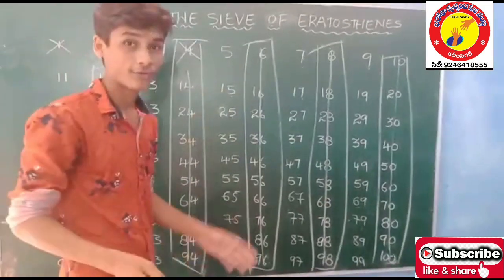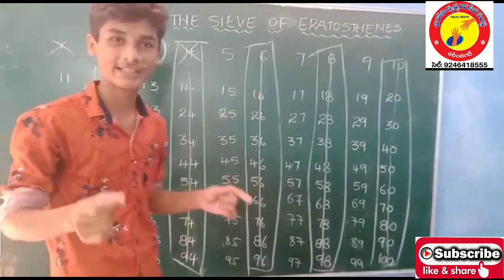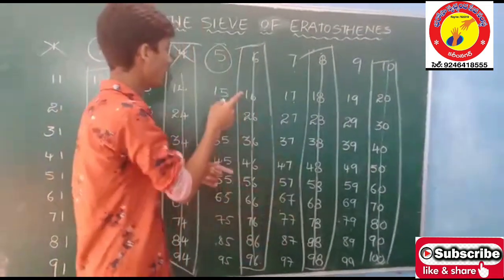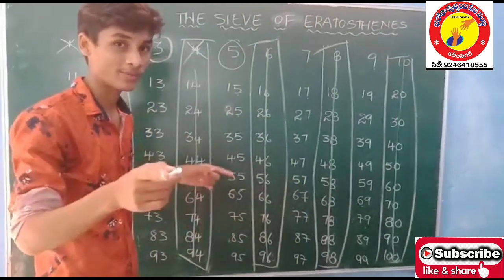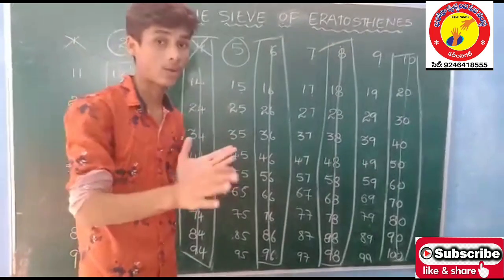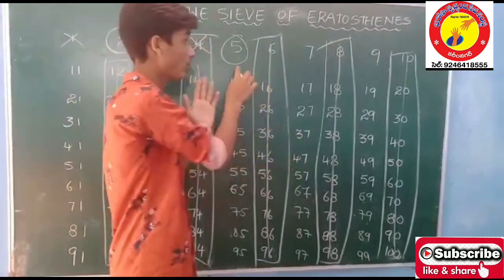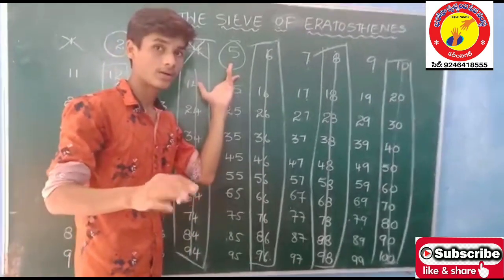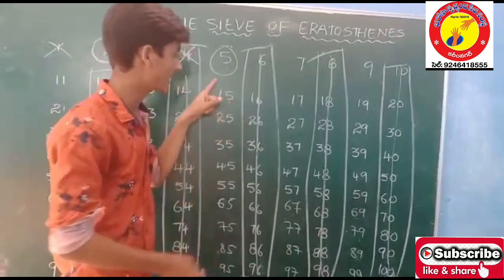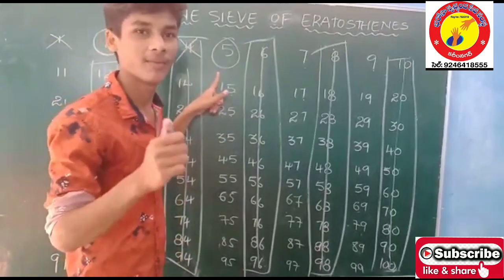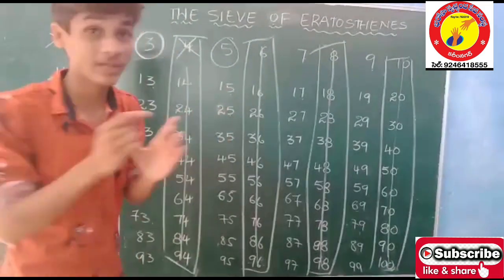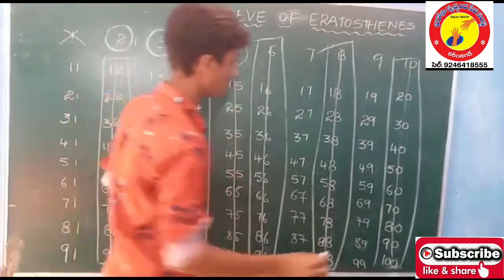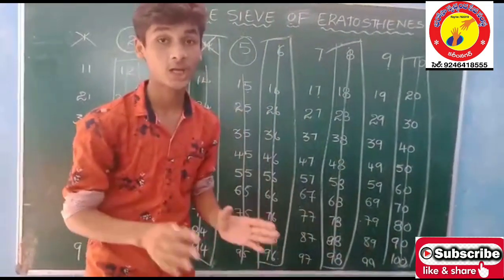Coming to 5 — 5 is a prime number because it is having only itself and 1 as its factors. So, as 4 is already a composite number, we should not take its multiples. Now, except 5 itself, all the multiples of 5 are not prime numbers, so we have to remove them from our number system. Strike them out. These are all our composite numbers.